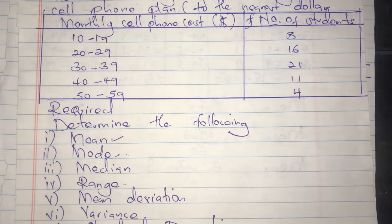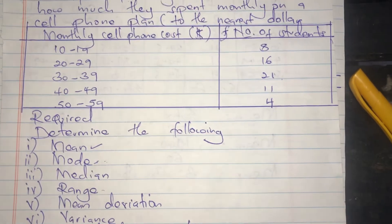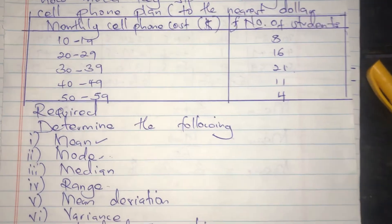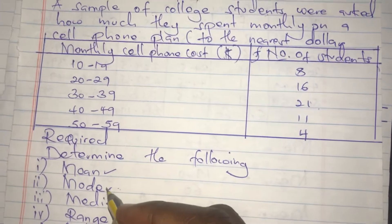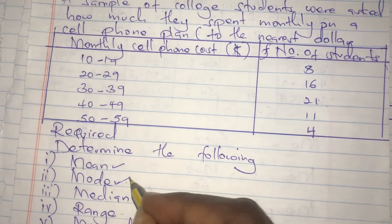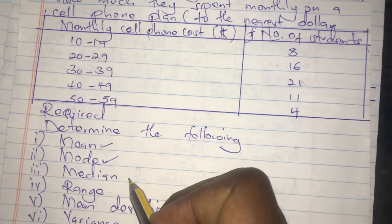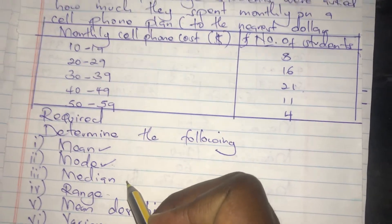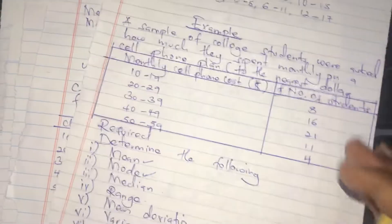We are still continuing with our question about group data. We are done with calculating the mode. The next thing we are doing is to calculate for the median using this same question.